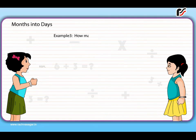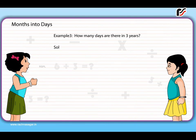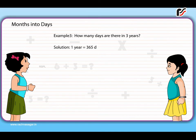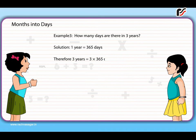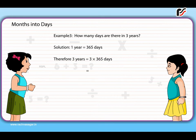Example 3: How many days are there in 3 years? Solution: 1 year = 365 days, therefore 3 years = 3 × 365 = 1,095 days.